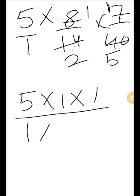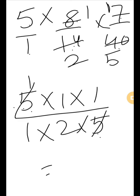Now write the numerator first: 5 multiply 1 multiply 1. Now write the denominator: 1 multiply 2 multiply 5. Now in the numerator we have 5, and in the denominator also 5. We will cancel 5 by 5. So the numerator becomes 1 multiply 1 multiply 1, that is 1. Denominator: 1 multiply 2 multiply 1, that is 2. Answer is 1/2.